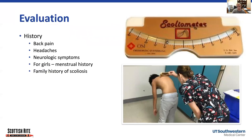In terms of evaluation, it's really important to get a good history on these patients regarding back pain, headaches, and any neurologic symptoms. For girls, it's really important to get a menstrual history so that we can gauge where they are in their growth cycle. And it's also really important to know if there's a family history of scoliosis.